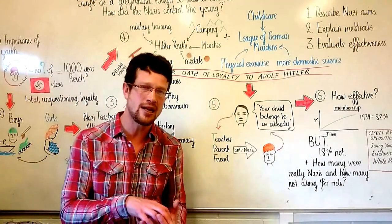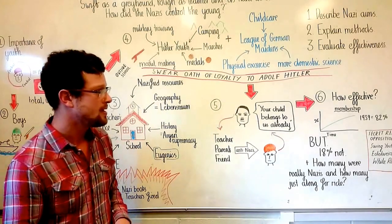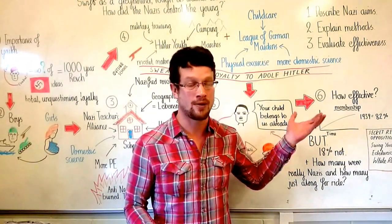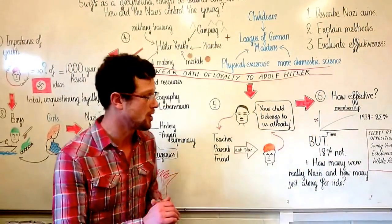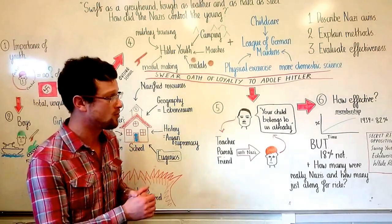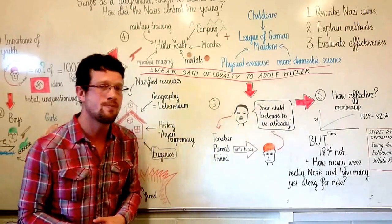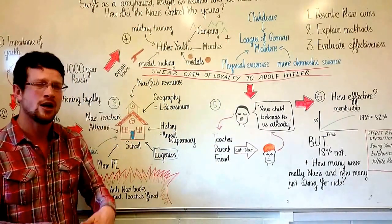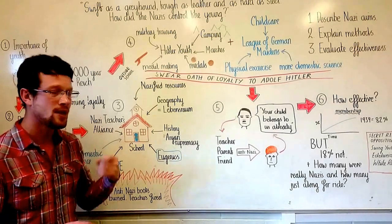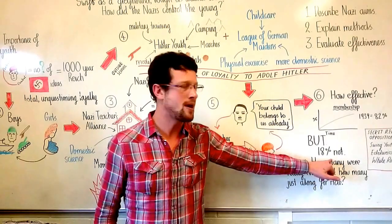But how effective was it? Now we do know between 1933, when Hitler came into power, and 1939, when World War II broke out, membership of Nazi youth organizations steadily rose. And by 1939, 82% of all young people were members of a Nazi youth organization. So that would suggest that Nazi control was actually highly effective.